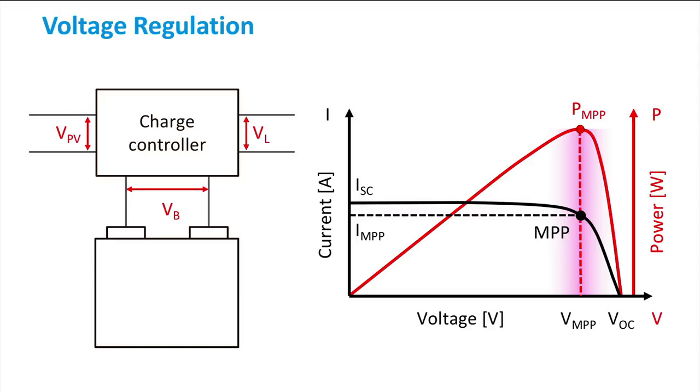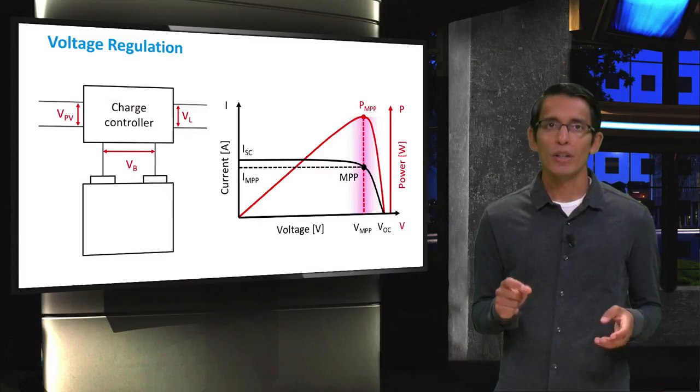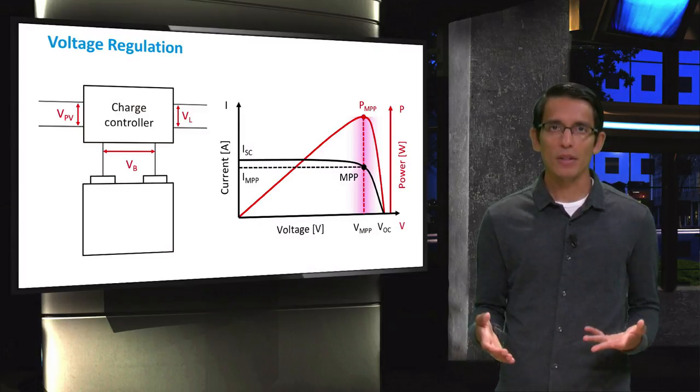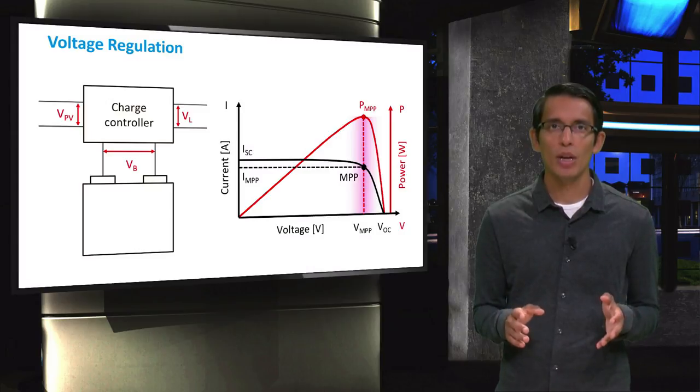In addition to current regulating functions of a charge controller, it can also function as a voltage regulator. Some charge controllers that are currently available in the market have MPP trackers included in them. With the presence of the MPP tracker, the charge controller can also act as a voltage decoupling device where the PV voltage and the battery voltages are decoupled. This allows for the PV modules to operate close to its maximum power point voltage and the battery close to its rated voltage range.